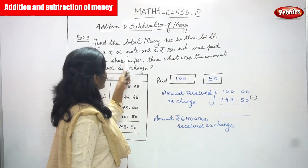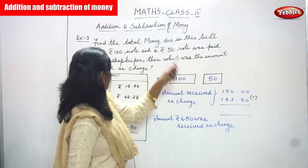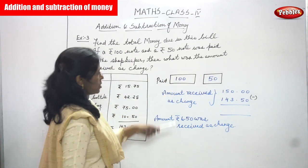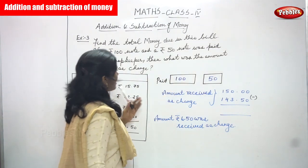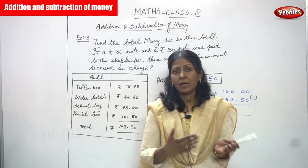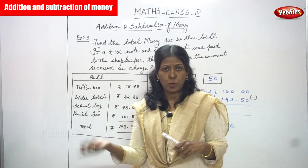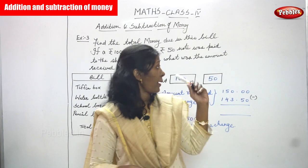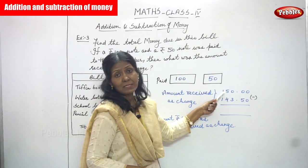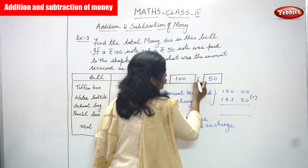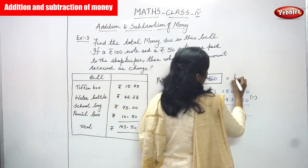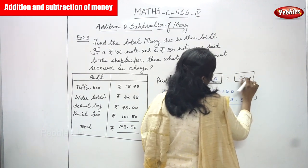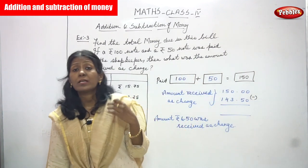If a rupees 100 note and a rupees 50 note was paid to the shopkeeper, then what was the amount received as a change? A person went to the shop and bought something. He paid rupees 100 and rupees 50, so he paid 150 rupees to the shopkeeper.